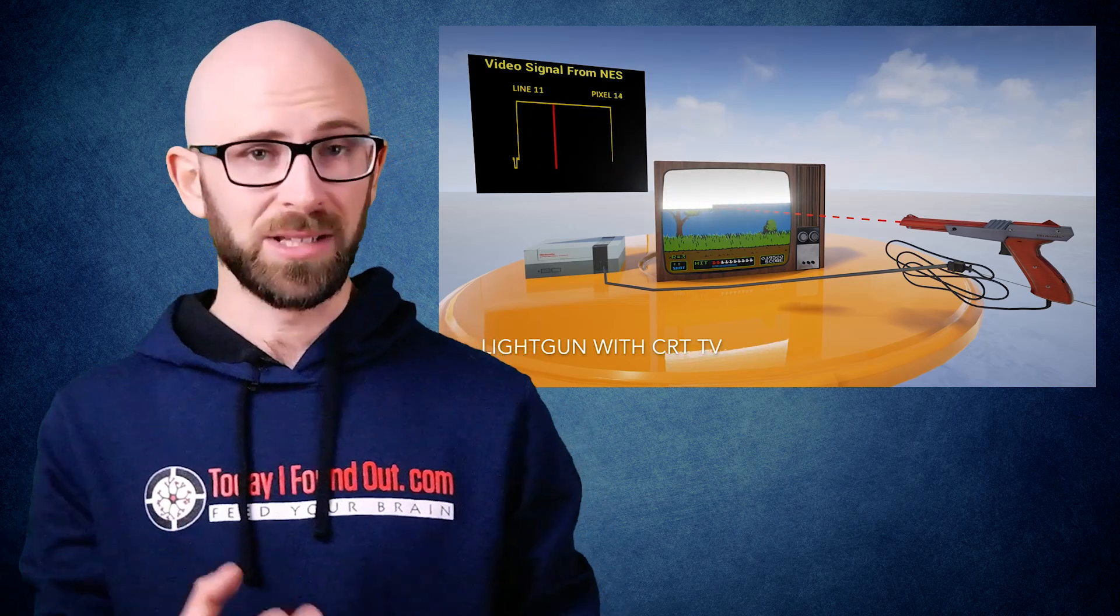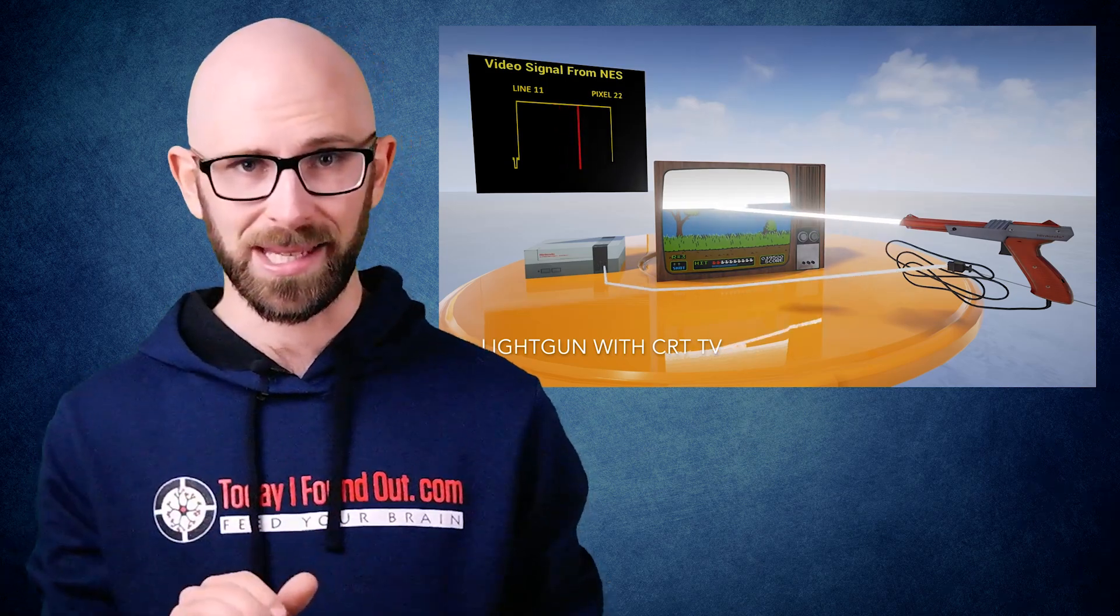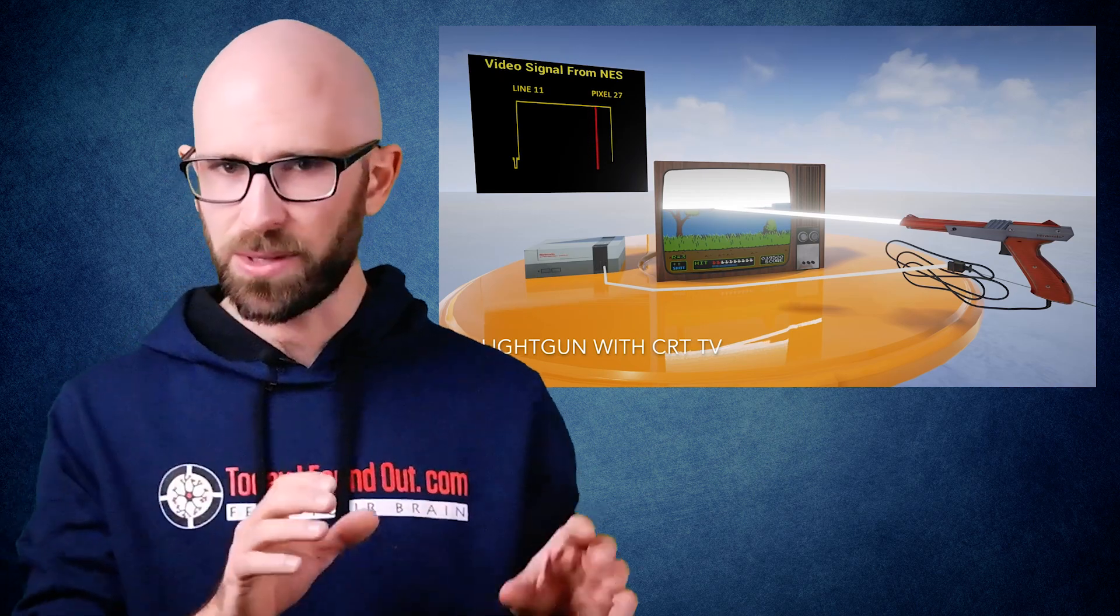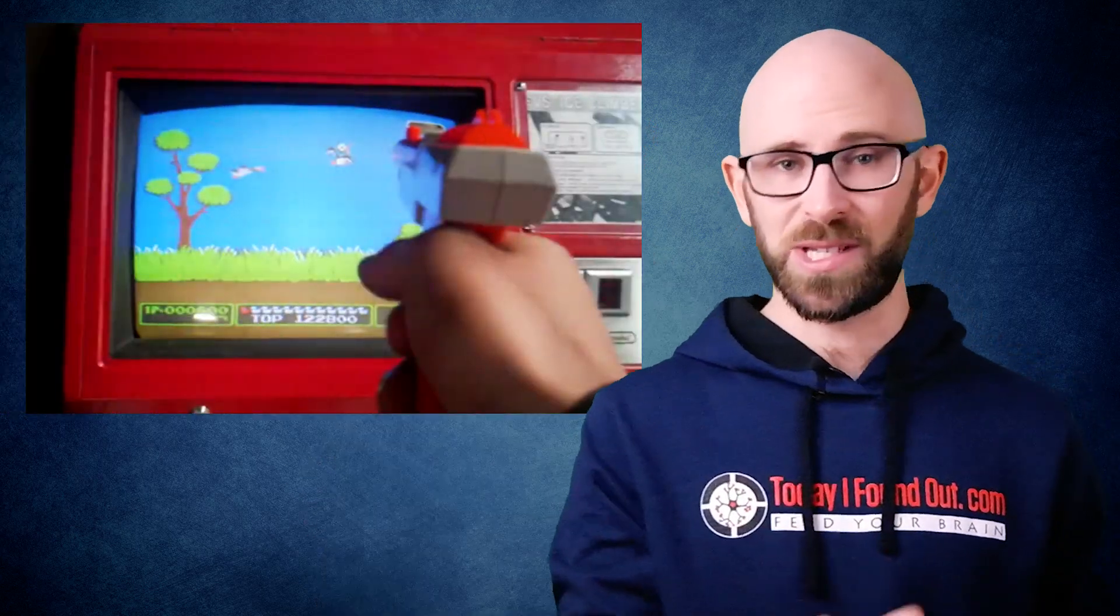This signal is in the form of pulses, which signify the start of the horizontal and vertical retracing. The computer hooked up to the TV can use these pulses to more or less tell what area is currently being traced on the TV. It can then time this with a shift in light detected by the photodiode. Thus, with precise enough timing, it is able to detect which target is being hit in just one frame.